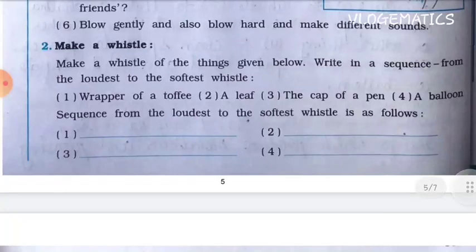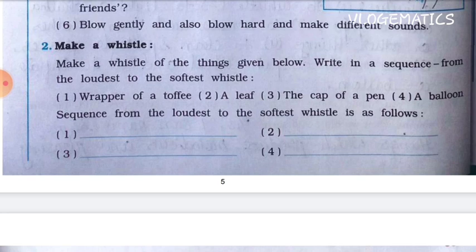Activity two: Make a whistle from the things given, then blow and rank them in sequence from the loudest to the softest whistle — number one: wrapper of a toffee, number two: a leaf, number three: a cap of a pen, number four: a balloon. You need to whistle using all four things and put the loudest as number one through to the softest as number four.